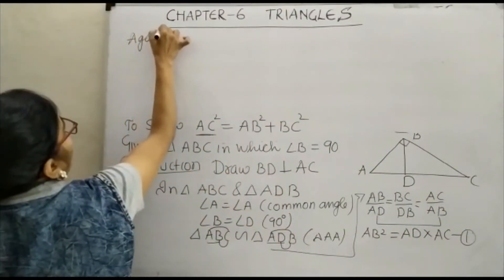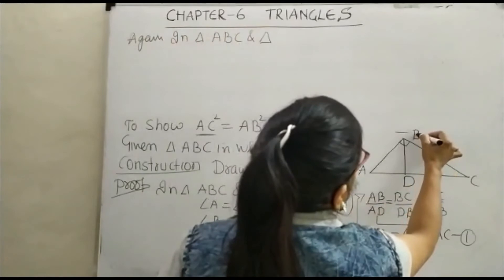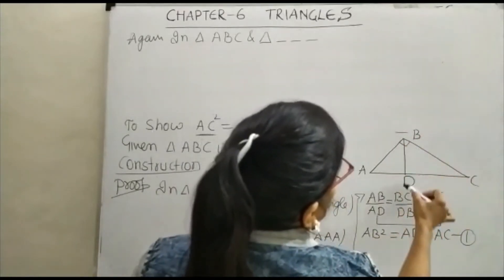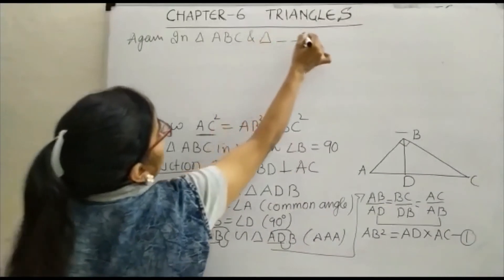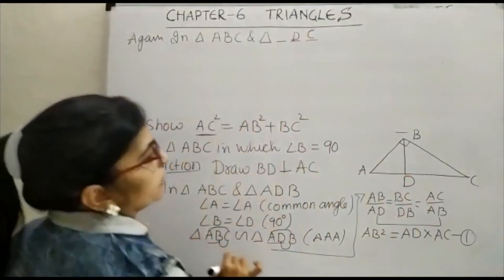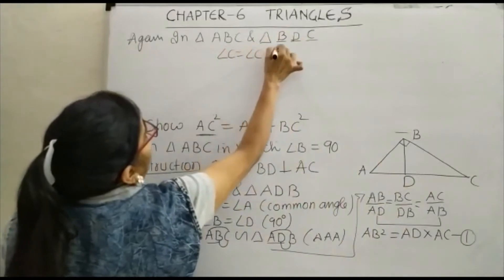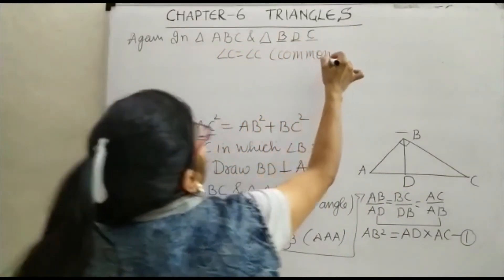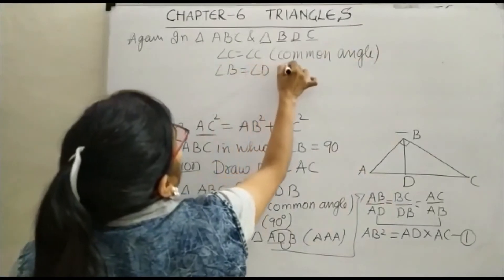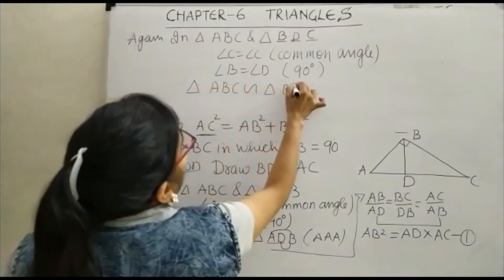Again, in triangle ABC and triangle BDC: angle C is equal to angle C — this is your common angle. And angle B is equal to angle D, both 90 degrees. Therefore, triangle ABC is similar to triangle BDC, again by AA similarity.